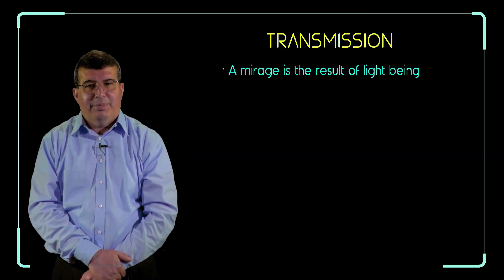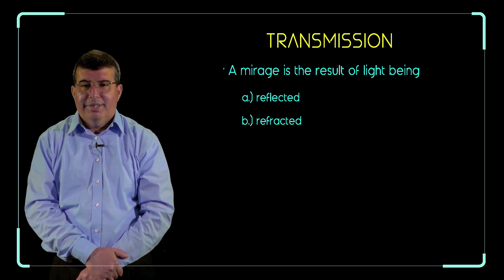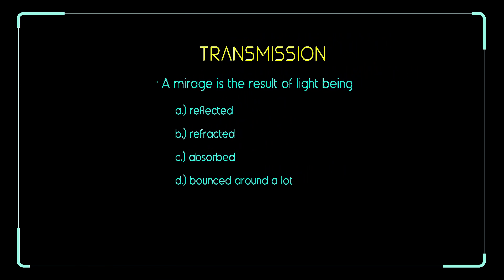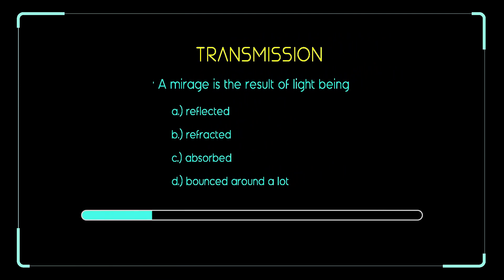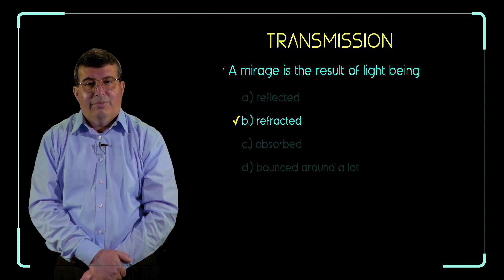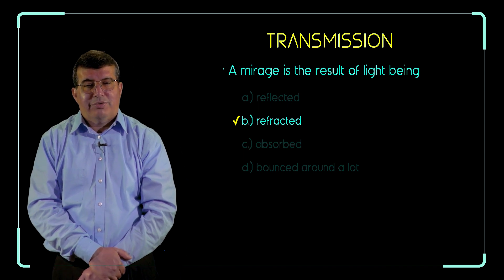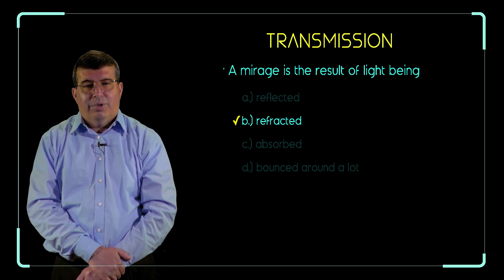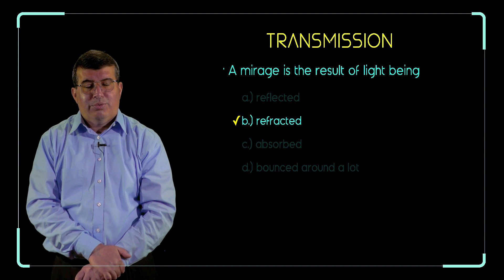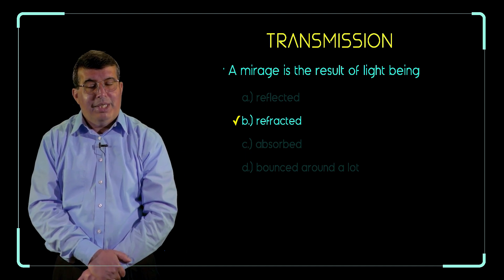A mirage is a result of light being (A) reflected, (B) refracted, (C) absorbed, or (D) bounced around a lot. The correct answer is B, refracted. The source of the mirage is the fact that light travels faster in hot air than in cool air, so when the air is warmer near the surface of the road, the light is bent — refracted — by traveling faster through the hot air.